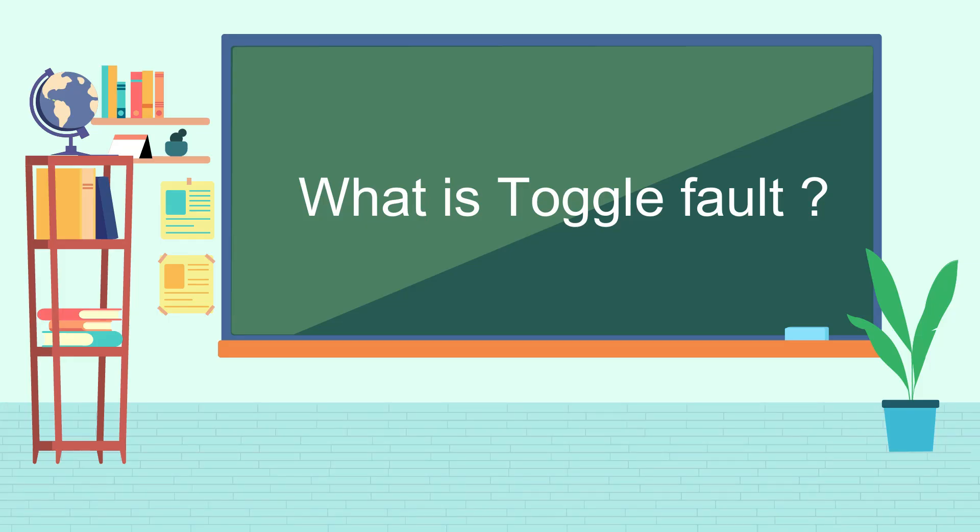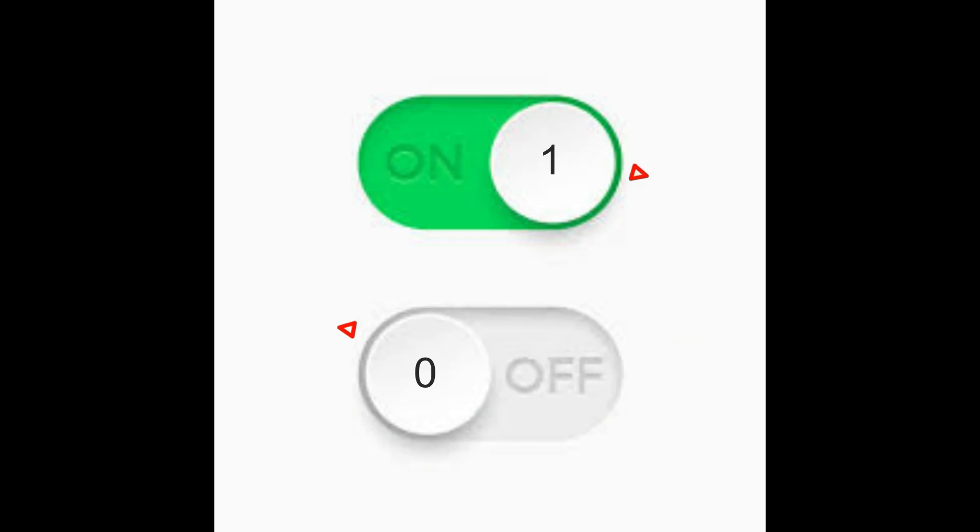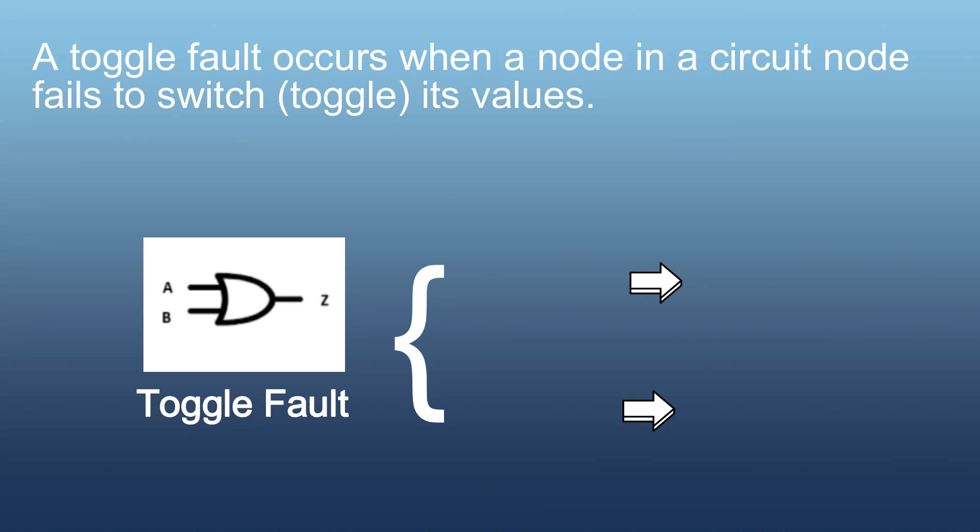Second type of functional fault is toggle fault. Let's understand what is toggle fault. Toggle means changing value either from 1 to 0 or from 0 to 1. A toggle fault occurs when a node in a circuit fails to switch its value. In the example below, if Z pin of OR gate fails to switch from 1 to 0 or from 0 to 1, then Z pin or node is said to be at toggle fault.